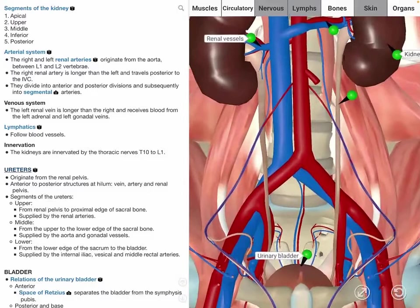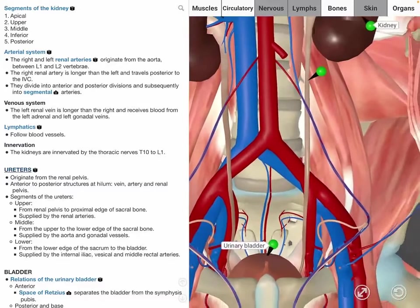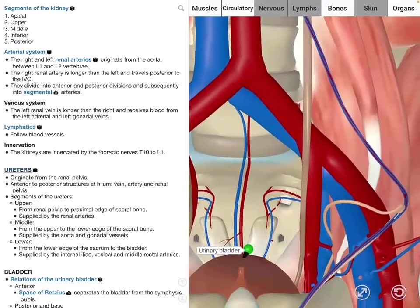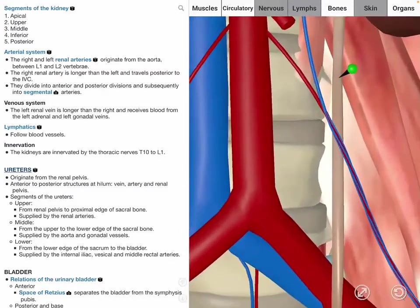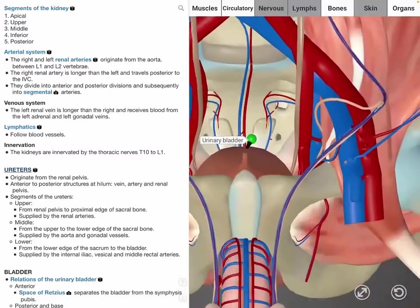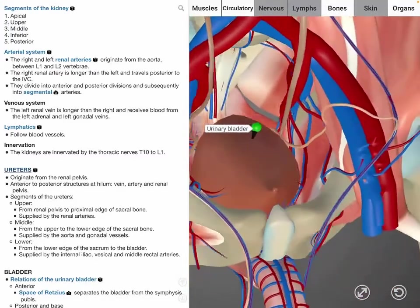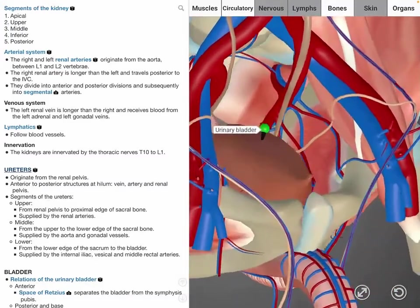The lower segment is from the lower edge of the sacrum to the bladder, and that is supplied by the internal iliac and superior vesicle arteries. Something that is extremely important to remember is the course of the ureter from the beginning to the end. Approximately, it travels under the gonadal arteries before traveling over the common iliac arteries and then under the uterine artery or vas deferens.